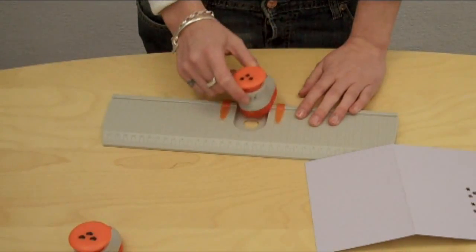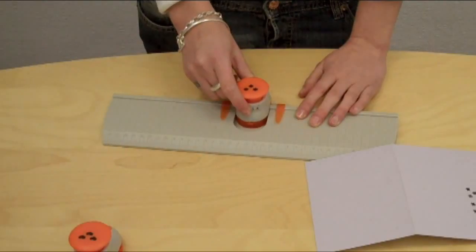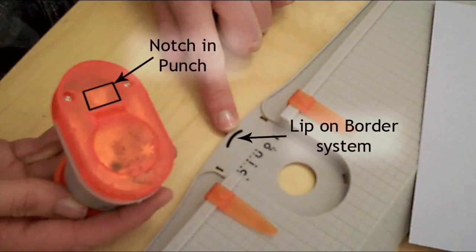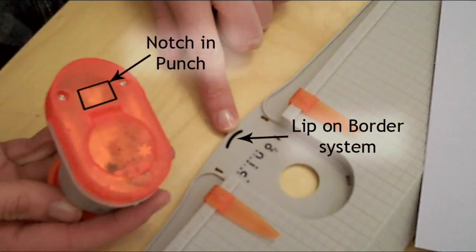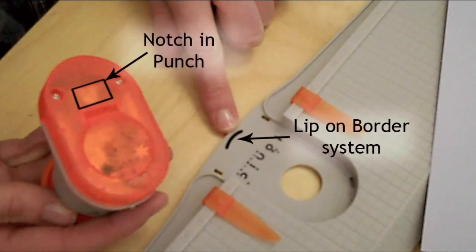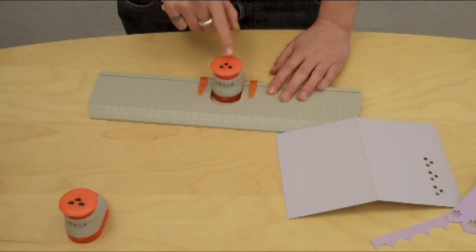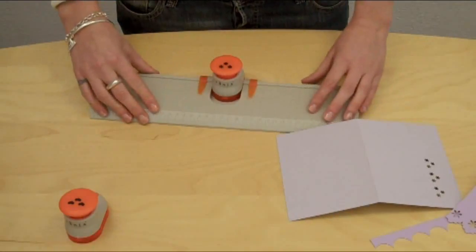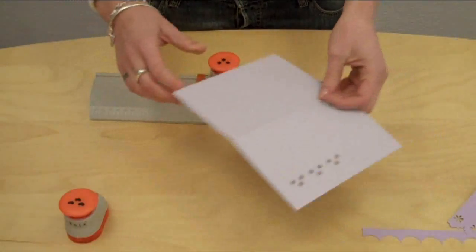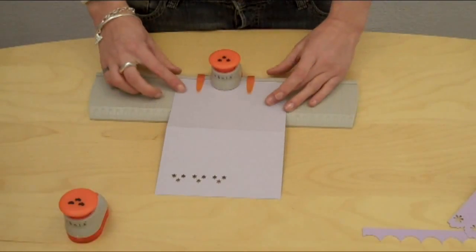Now there's actually a ridge on the border system which you can place your punch on, and this will allow you to get a much closer edge to your card.